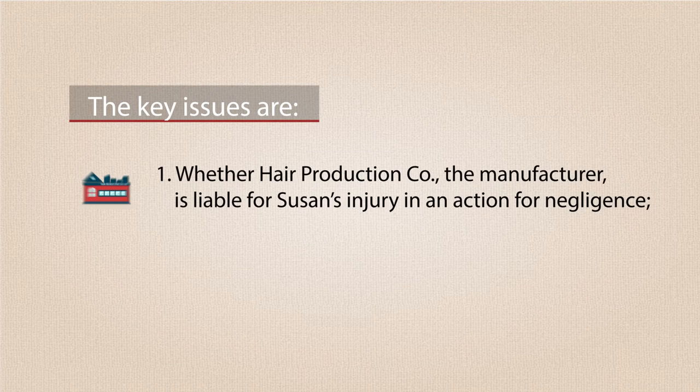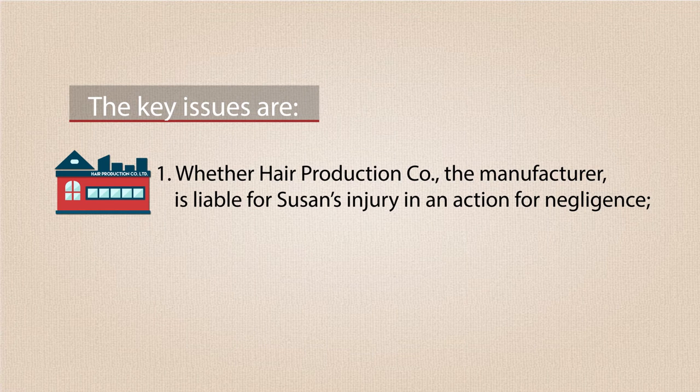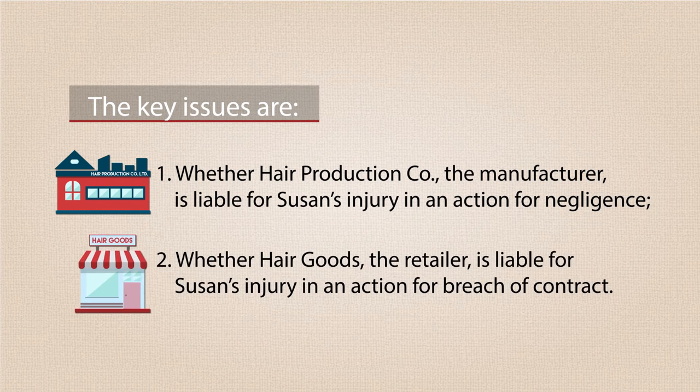Let's turn to the example problem question that we introduced in episode one: the case of Susan and the sizzling hair dryer. In that problem, Susan suffered physical injury when the hair dryer she was using caused her hair to catch fire. The key issues are whether the hair production company, the manufacturer, is liable for Susan's injury in an action for negligence, and whether the hair goods, the retailer, is liable for Susan's injury in an action for breach of contract.